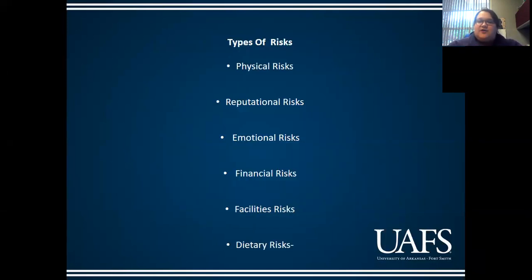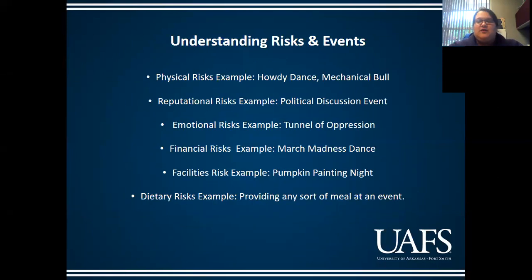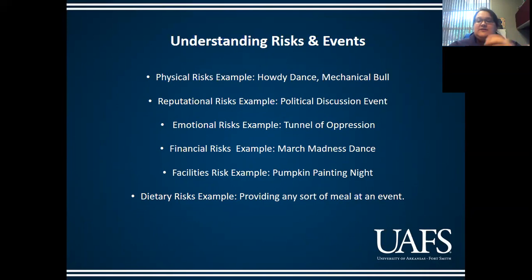Moving into types of risks: physical, reputational, emotional, financial, facilities, and dietary. A physical risk example is Howdy Dance, which happens every year. We bring in a mechanical bull — Campus Activities Board and Greek Board work together on it. The mechanical bull is a physical risk: somebody could get knocked off, fall, hurt their head, or hit weird on their arm. Anytime you have something active like that, you're automatically in an area of physical risk.